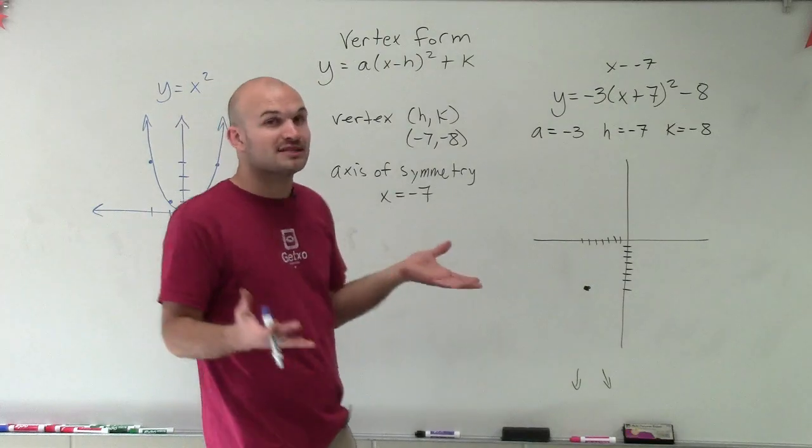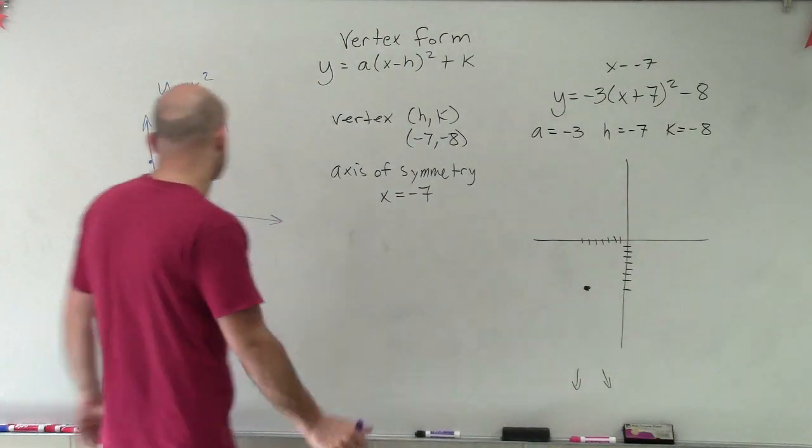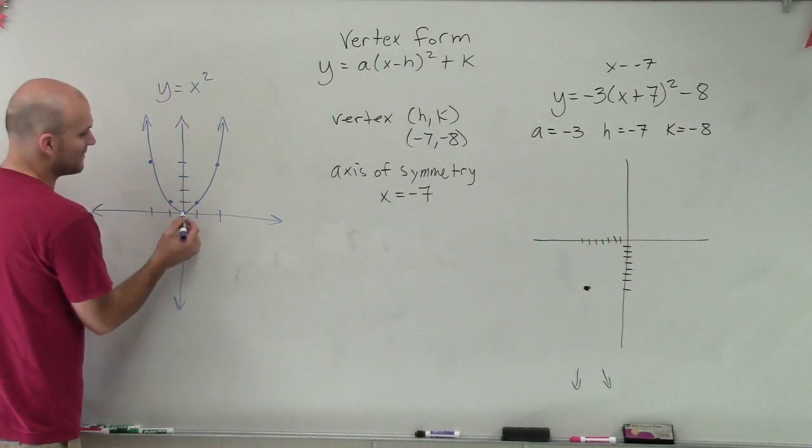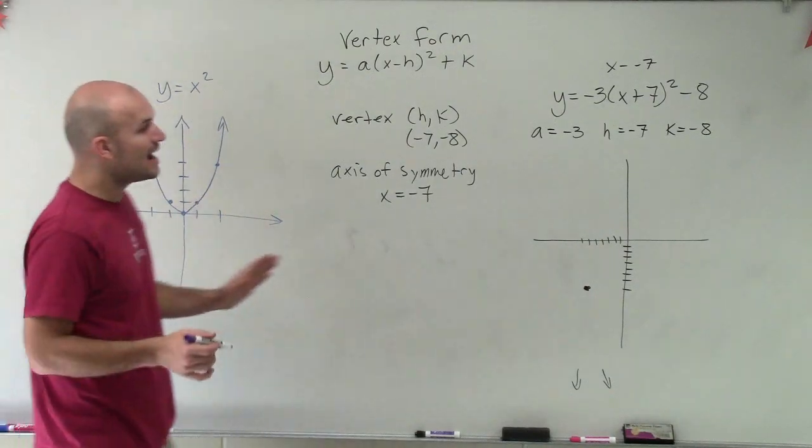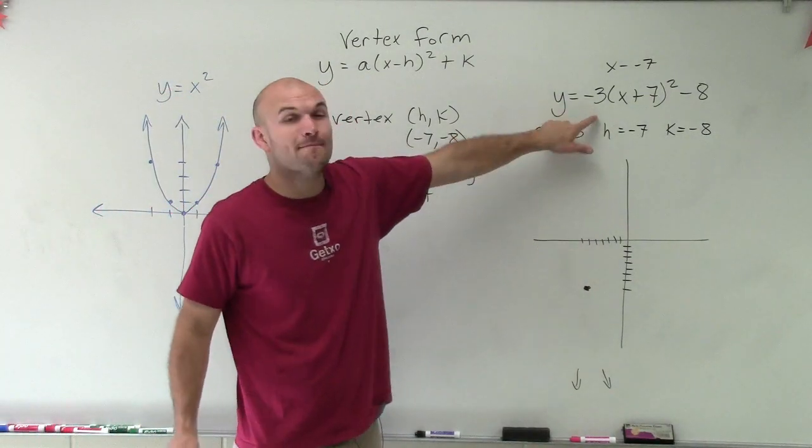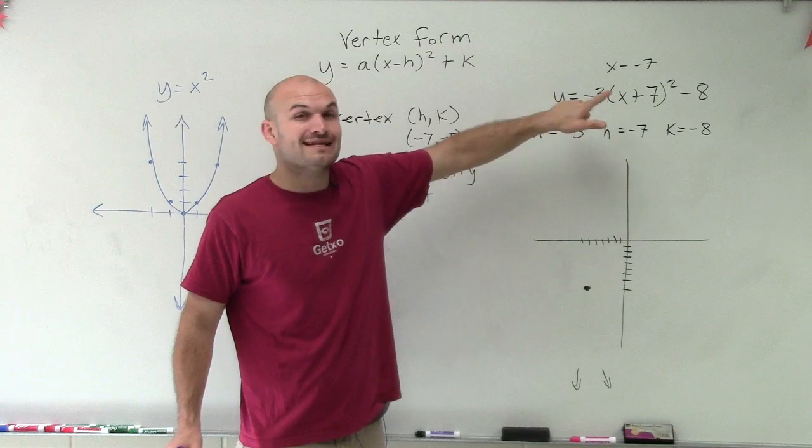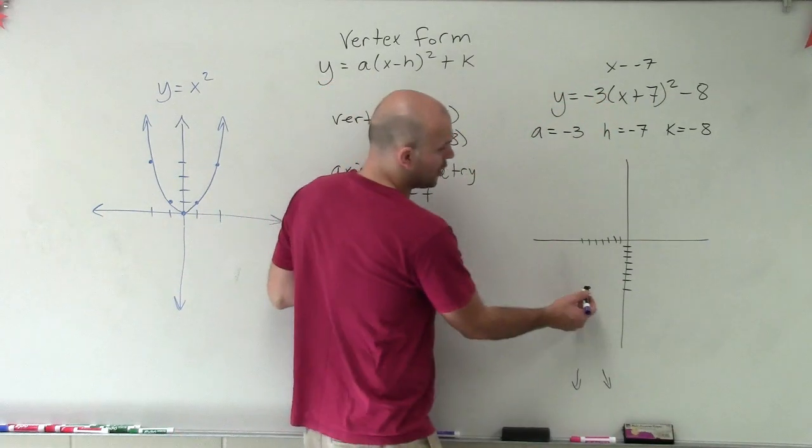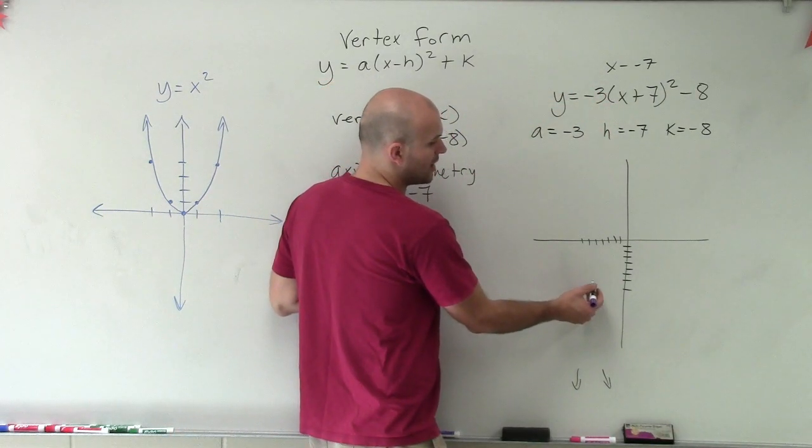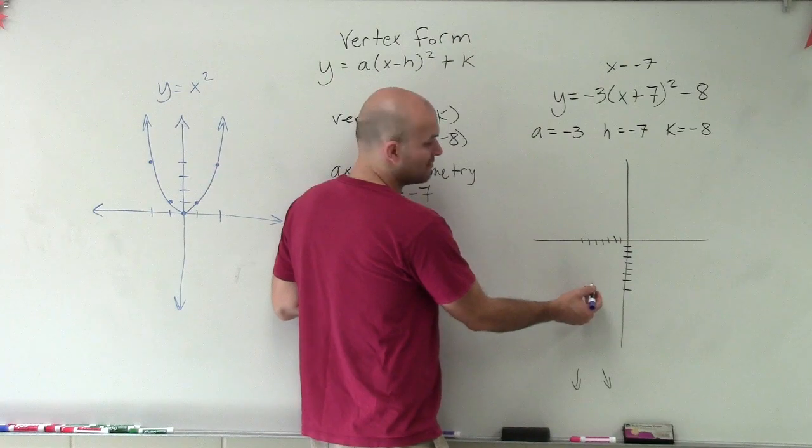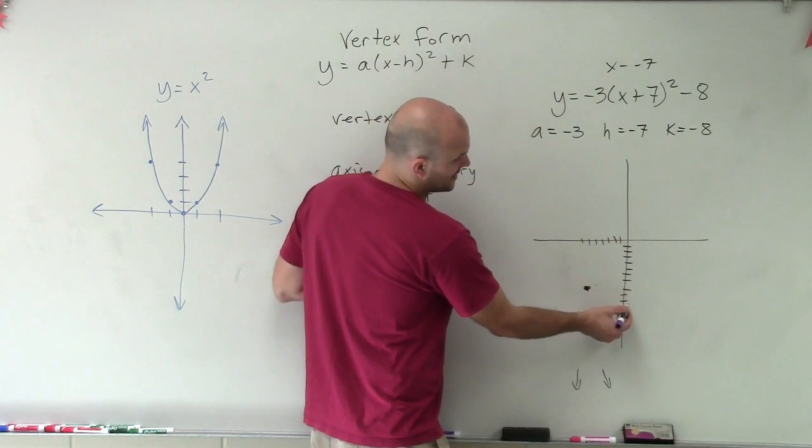However, let's go and take a look at how we're going to at least plot some points so we can see what this graph looks like. If I'm looking at this graph, I know I go over one, up one. But now I'm going over one, up one. But I'm going to multiply my y value by negative 3. So instead of going over one, up one, it's not going to be over one, up one. But now it's multiplied by negative 3, which means over one, down three units.